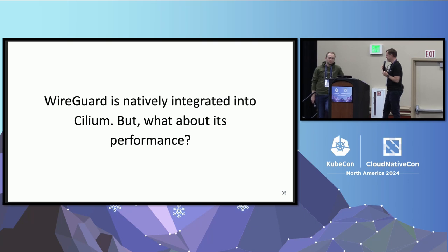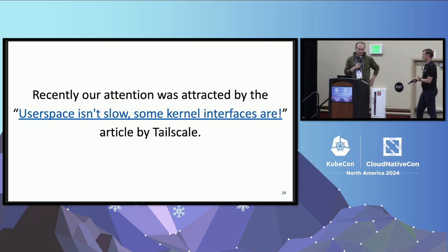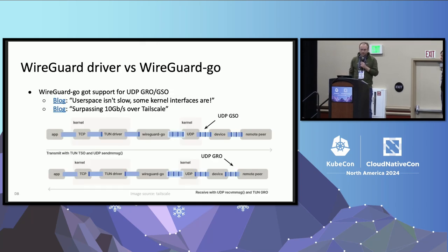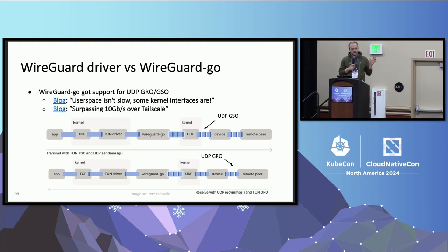Hopefully you now see that it's really easy to enable and configure WireGuard. But what about the performance? Recently we got our attention to a blog post from people from Tailscale, where they said basically user space isn't slow, but kernel interfaces are. Being kernel developers, we were naturally curious. They are using a WireGuard Go implementation underneath, and what they added to make it fast was a mechanism called UDP-GRO-GSO — GRO is Generic Receive Offload and GSO is Generic Segmentation Offload. They were able to batch packets with UDP messages into the tunnel device and out of it, which is why they achieved better performance.